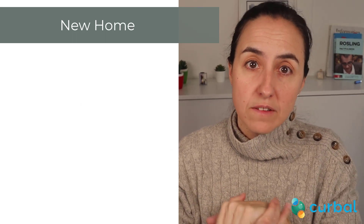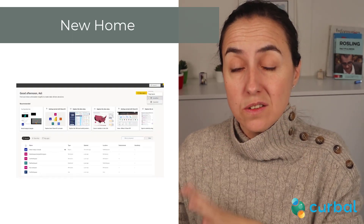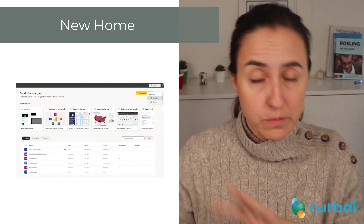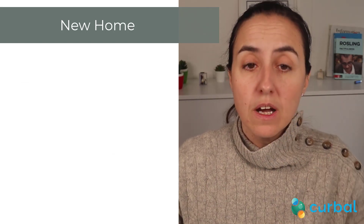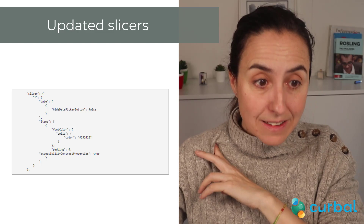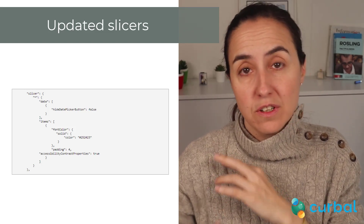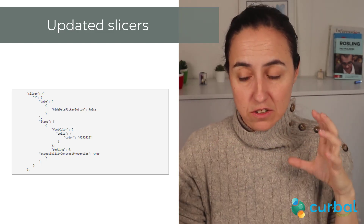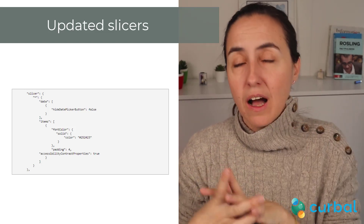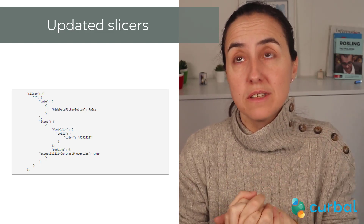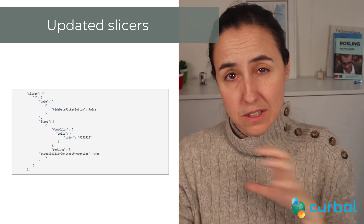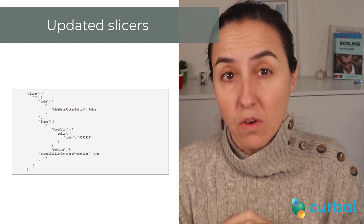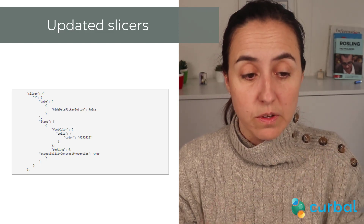You're also going to see a new layout for Home that is supposed to be easier to read. And the last update is updated slicer defaults for accessibility improvements — they even provided a JSON snippet. I would love it if the Power BI team would give us a JSON snippet every time they add a new property to any visual, so fingers crossed they'll do that.